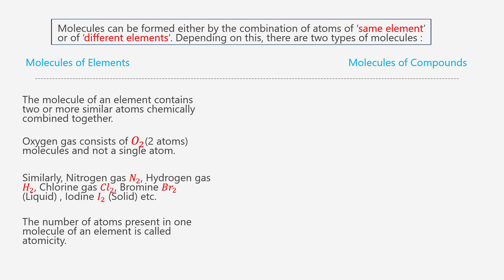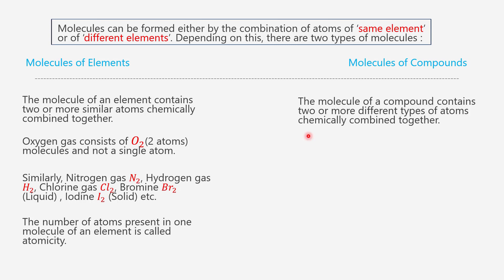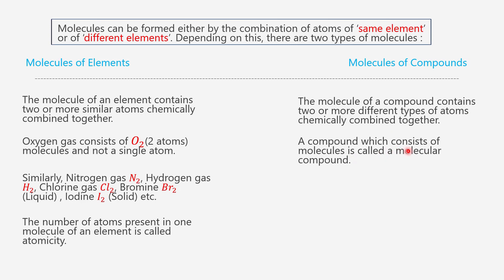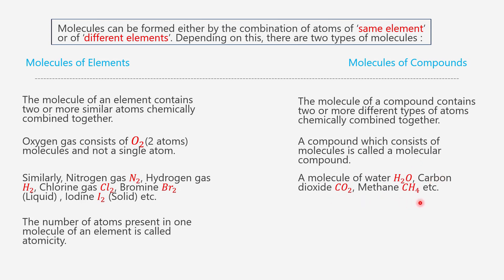Now we will discuss about molecules of compounds. The molecule of a compound contains two or more different types of atoms chemically combined together. A compound which consists of molecules is called a molecular compound. Examples include: a molecule of water, H2O; carbon dioxide, CO2; methane, CH4; and so on.